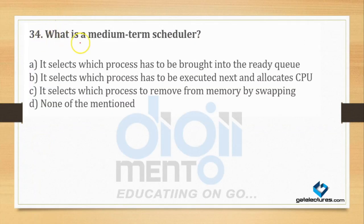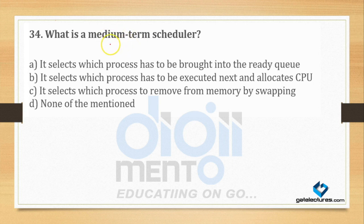Question number 34: What is a medium term scheduler? Medium term scheduler ka matlab kya hai — we have to read schedulers. Medium term scheduler ka matlab kya: process ko kahan se swap karna. Agar process IO queue ke andar hai, IO se ready queue mein bhejna, ready queue se IO mein bhejna. It selects which process has to be brought into the ready queue — this is the definition of the long term scheduler.